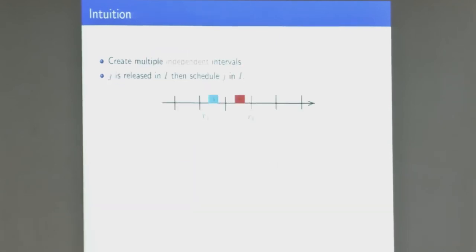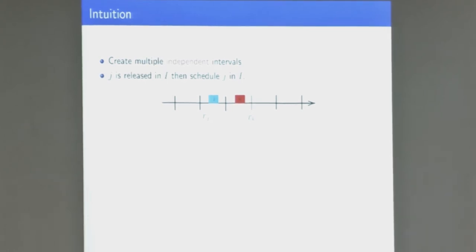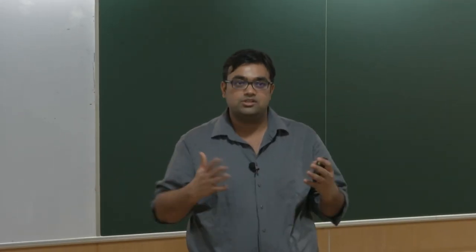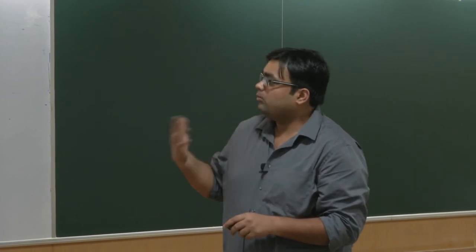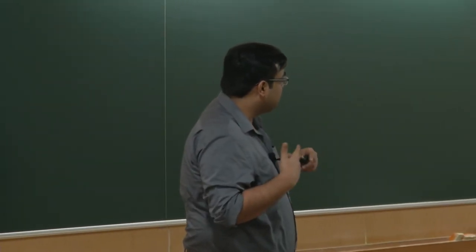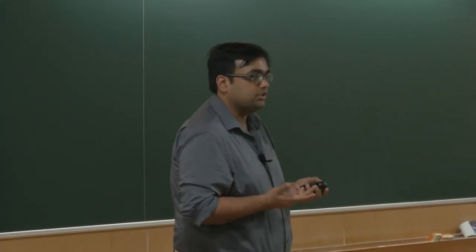The assumption is that if a job is released in an interval, you schedule it within that interval. Even a job released at a point within the interval gets scheduled before the interval ends. This is an offline schedule where you fit every job released in an interval and schedule it in the next interval. You are actually delaying it only two times — first collecting in one interval, then scheduling in the next. That is the basic idea for a single machine with unit weights.